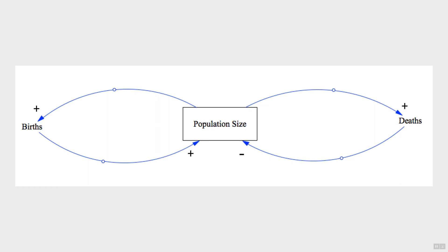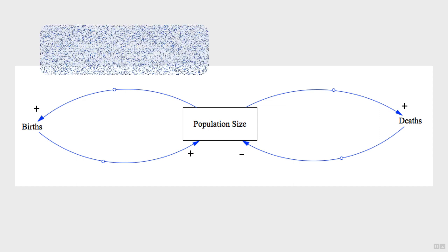When the causal links create a closed loop, or a closed circle, like we have on both sides of population size, we call this a feedback loop. The change starts at population size and comes back to population size again. If the links around the circle end up amplifying the starting variable, then it's a reinforcing feedback loop.